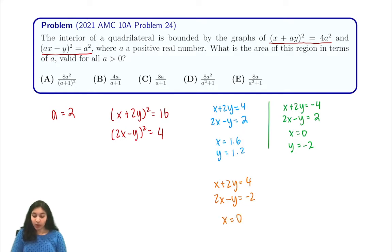In our final system of equations, we have x + 2y equals 4 and 2x - y is equal to negative 2. Here, we have x equals negative 1.6 and y equals negative 1.2.